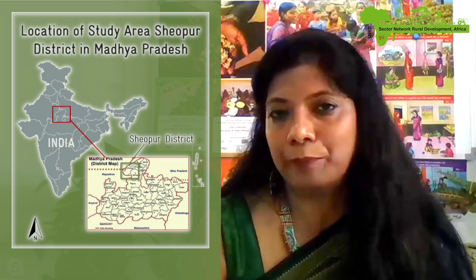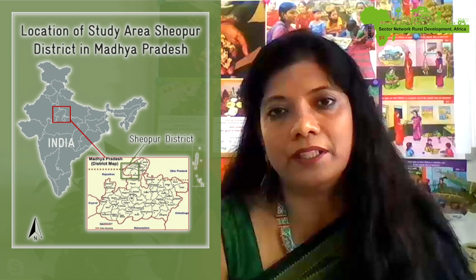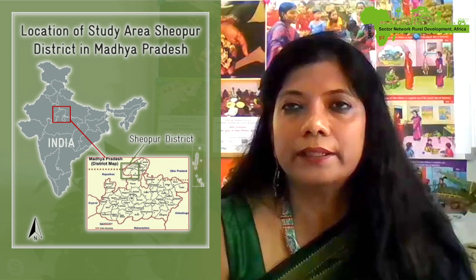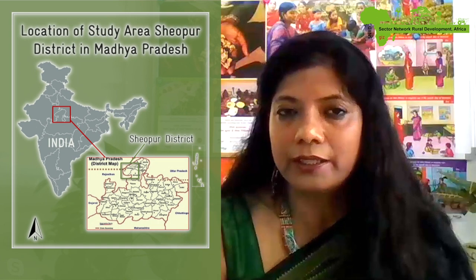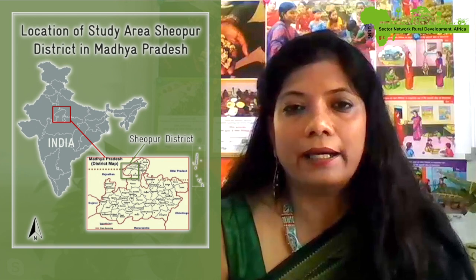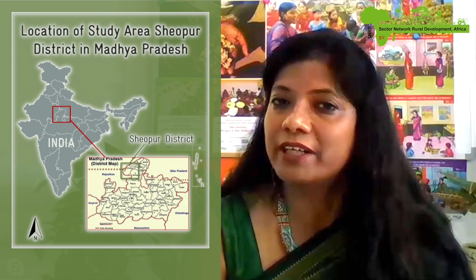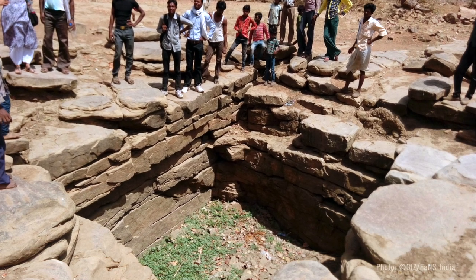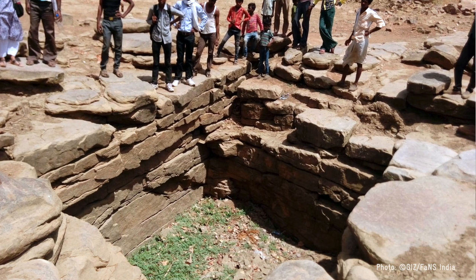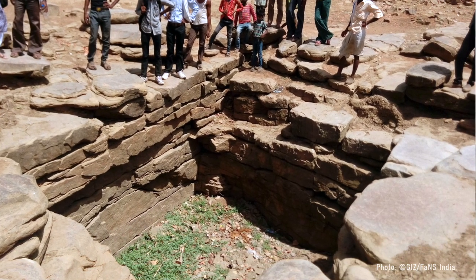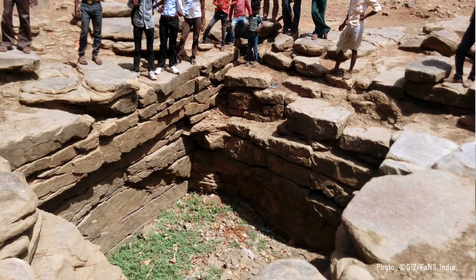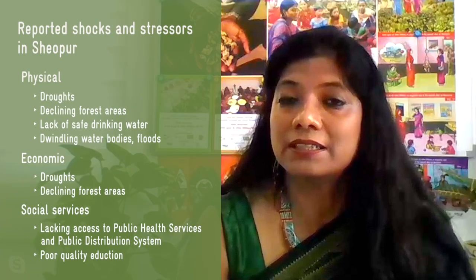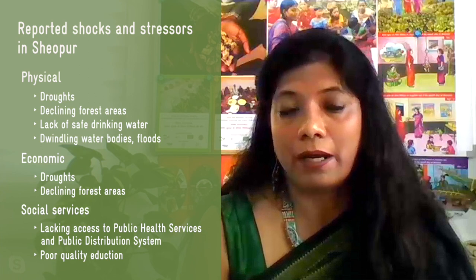Sheopur is mainly inhabited by Scheduled Tribes — the primitive people — whose food habits are more traditional, with a dependency on forest food. The terrain is rocky with a water crisis, and due to the remoteness of the area, stresses are highly prevalent. The study aimed to understand the basic stressors and shocks for the community and their coping strategies.